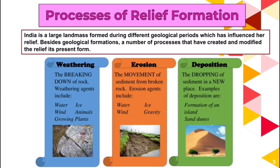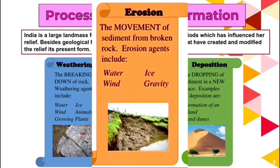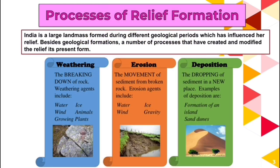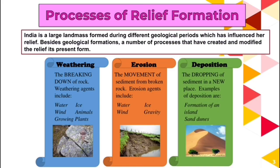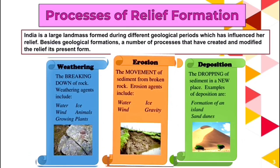When these sediments break down, they tend to get eroded. Erosion is the movement of the sediments from the broken rock — rocks broken due to weathering are eroded, that is moved from one region, again because of wind, water, ice, or gravity. When eroded from one region, the material tends to get deposited in another region. Deposition is the dropping of sediments in a new place. For example, you can see the formation of an island of sand dunes in the given picture. So these three processes are interlinked.